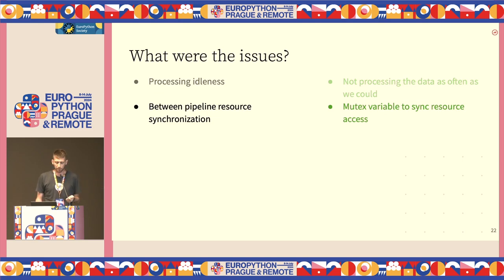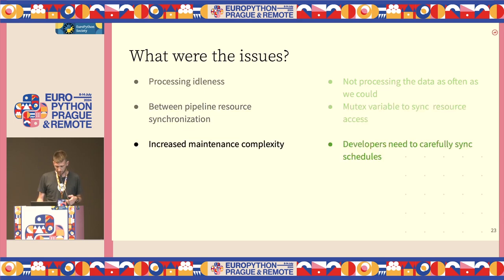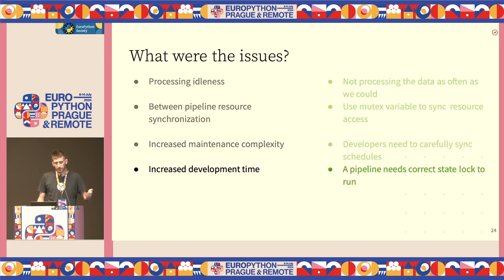Another issue was pipeline and resource synchronization. When pipelines run over multiple days and are constantly being scheduled and interconnected by some logic, you need to introduce a mutex variable to sync resource access — which was the worst part personally. This also increased maintenance complexity: developers needed to carefully sync the schedules between pipelines, knowing when each would run and understanding all the states the mutex variable could be in. This was a real pain, and of course it all increases development time.